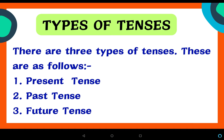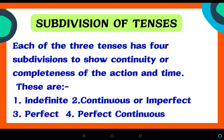There are three types of tenses. These are as follows: first is present tense, past tense, and future tense. Present is what is running now — which means it is happening right now. Past is what has already happened. Future is what is yet to happen.